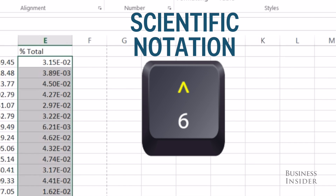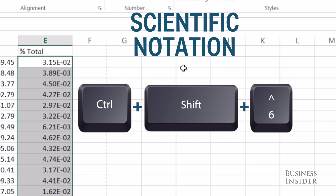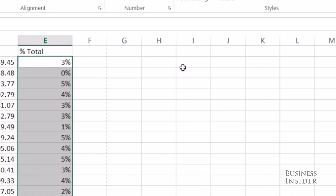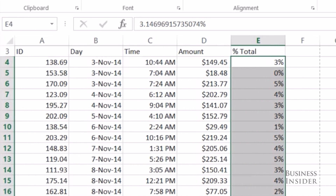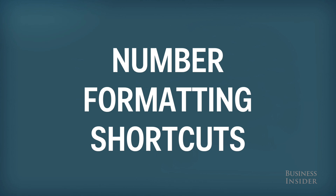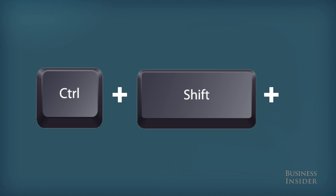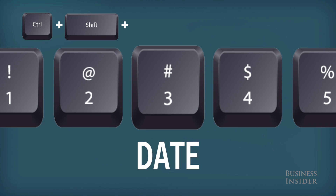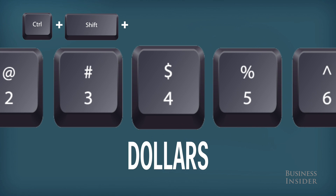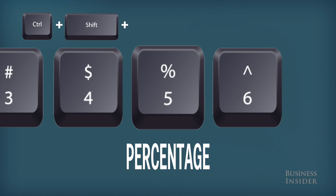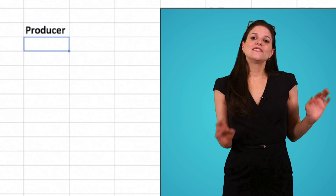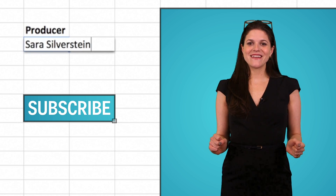The six key, Ctrl+Shift+6, is the caret — so the power-of symbol — and that will change your data to scientific notation. I change it back to percentage right there. That's it — those are the most helpful formatting tricks. Don't forget to subscribe for more Excel tips and tricks.